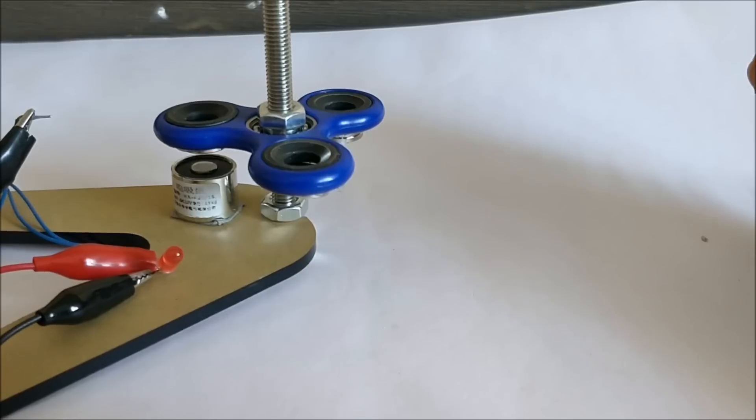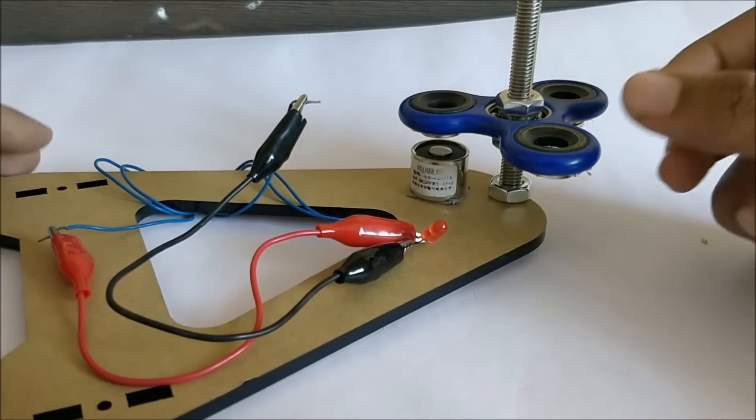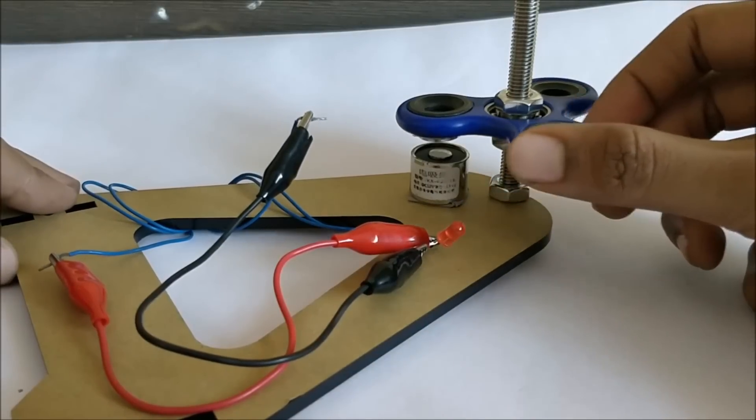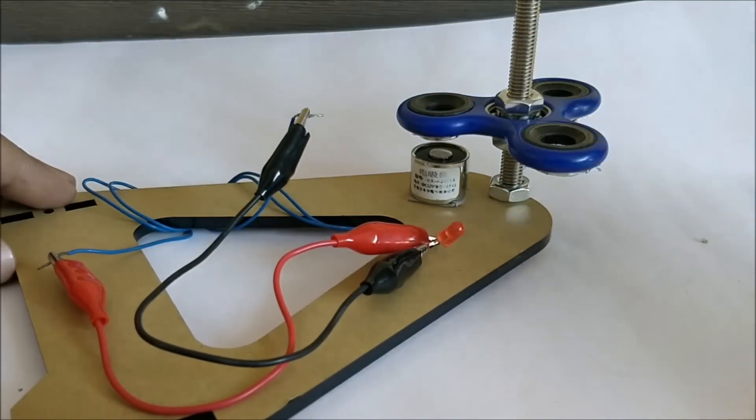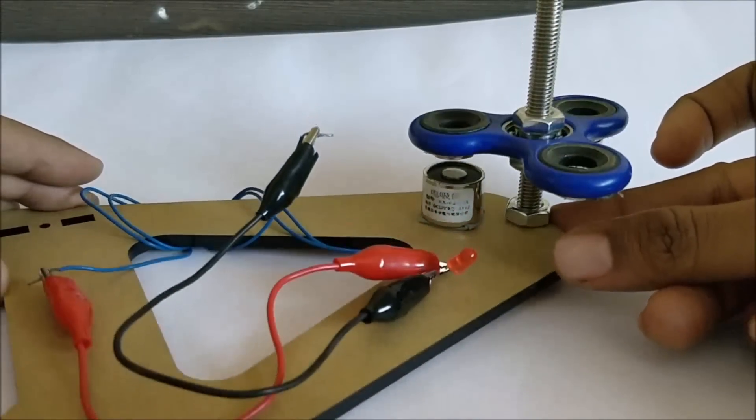Hello guys, welcome to another video of Circuit Digest. So in this video we'll have a fun experiment with a fidget spinner and an electromagnet. What actually happens here is the fidget spinner has neodymium magnets behind it which will produce a varying magnetic field.